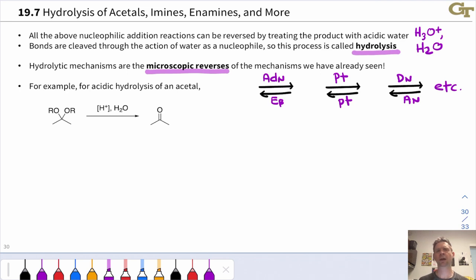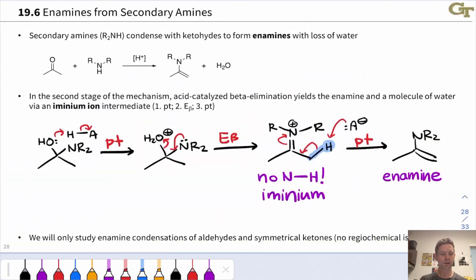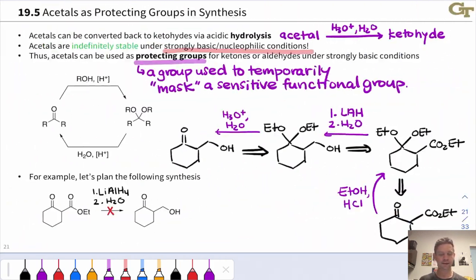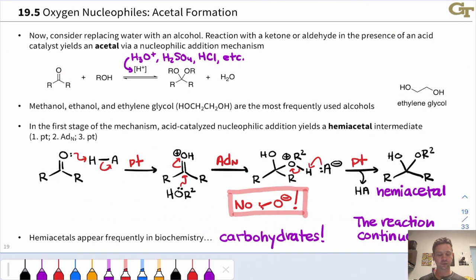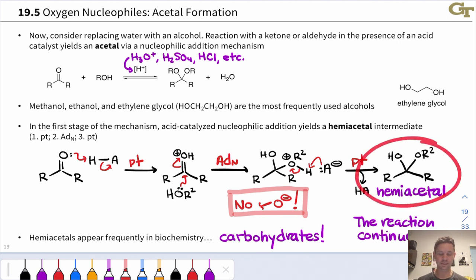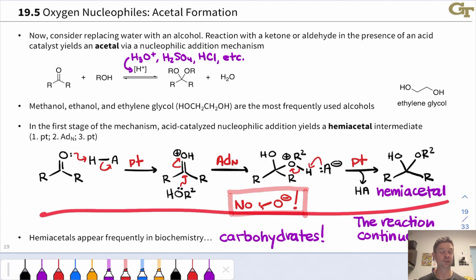To think about the mechanisms of hydrolysis, we can look back at the condensation mechanisms, start with the products, and work them backwards. For the acidic hydrolysis of an acetal, let's revisit acetal formation in two stages. The first stage was acid-catalyzed nucleophilic addition, where acid HA catalyzes the addition of R2OH to the ketone, giving a hemiacetal.